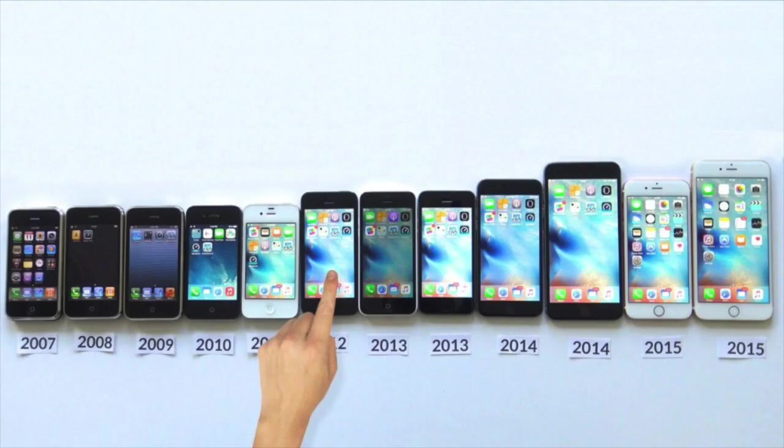So what are iterations in general? Well, take an example like the iPhone. Every year Apple brings out an iPhone, usually around September and every year it gets better and better.